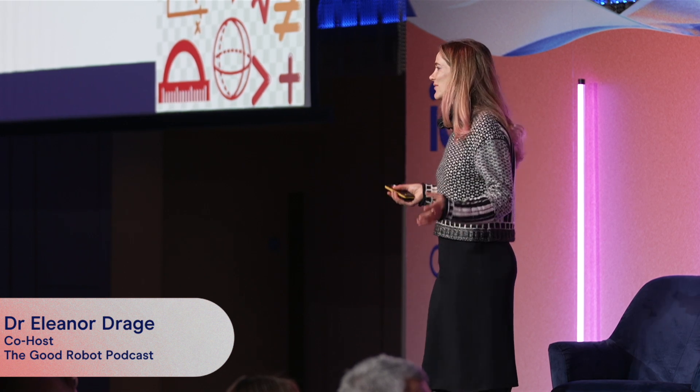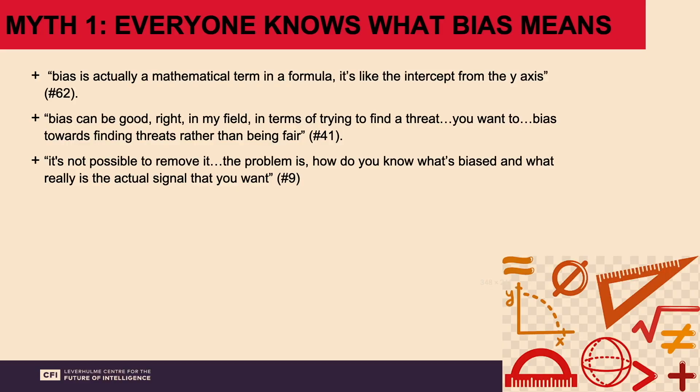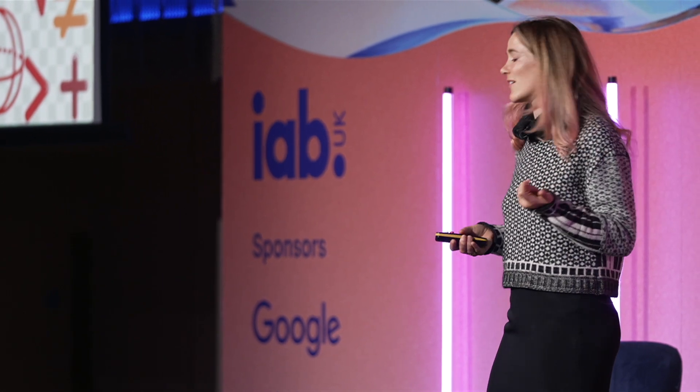One of the big myths about AI is that everybody knows what bias means — that everyone has the same idea about what bias is. I interviewed engineers at a massive tech company and everyone gave a different answer. Some said bias is a mathematical term, like the intercept from the y-axis. Others said bias can be good when trying to find a threat. And some said you actually can't remove bias at all — how do you know what's biased versus the signal you want? So when you're thinking today about what bias in AI is, you're not alone.